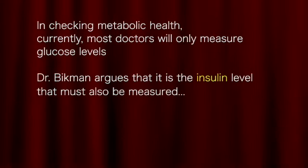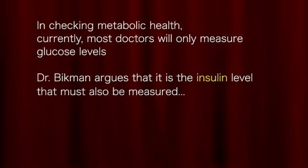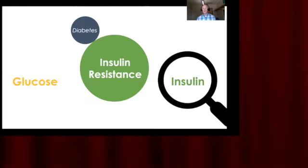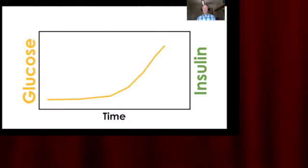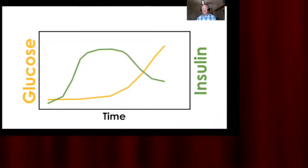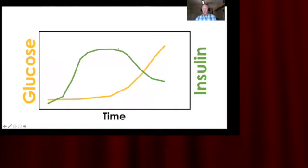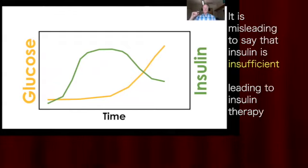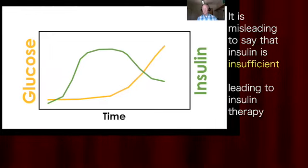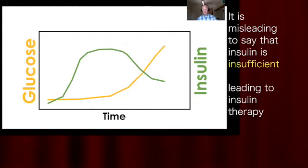Dr. Bickman argues that it is the insulin level that must also be measured. Insulin ought to be the metric we scrutinize when we want to understand type 2 diabetes. If we superimpose insulin over the lifetime of someone progressing towards type 2 diabetes, it starts low, elevates significantly, then starts to come down — but is nevertheless higher than before. Commonly in the literature, we say insulin is insufficient to keep glucose in control, which leads some to erroneously conclude that insulin is essentially zero, used as justification for insulin therapy. It is misleading — insulin is insufficient to keep glucose in check, but it is still elevated.